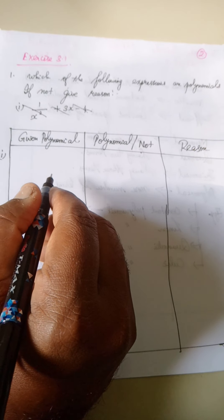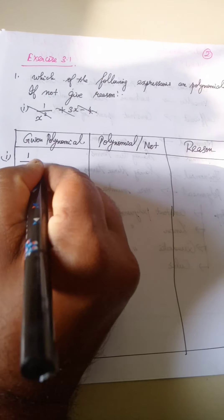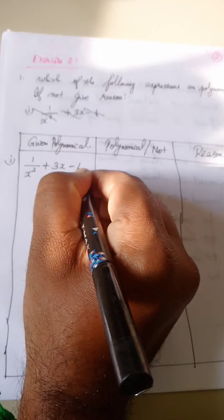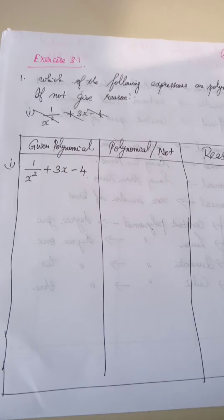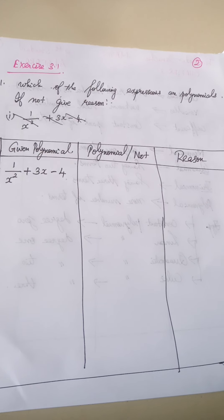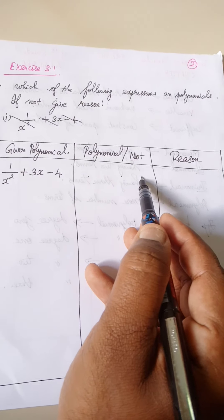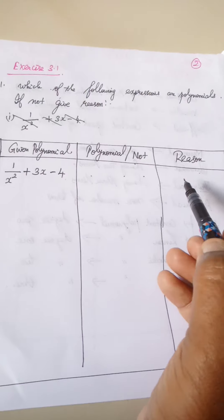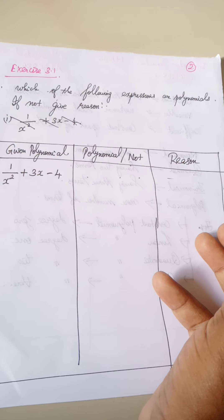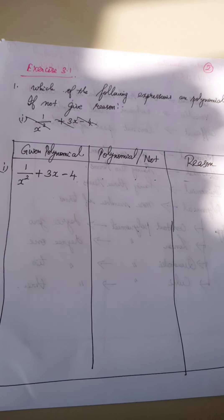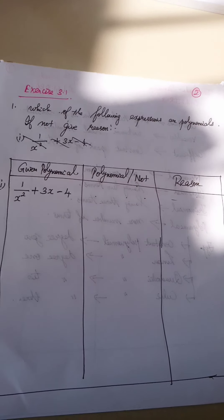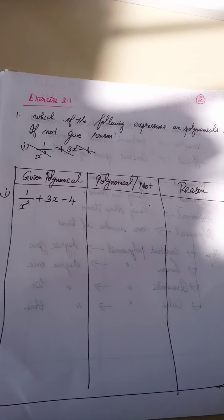First polynomial: 1 by x square plus 3x minus 4. We need to find whether it is a polynomial or not. Polynomial means it should have a positive integral power. If it is not a positive integral power, then it is not a polynomial. Now, 1 by x square can be written as x power minus 2. So the expression becomes x power minus 2 plus 3x minus 4.